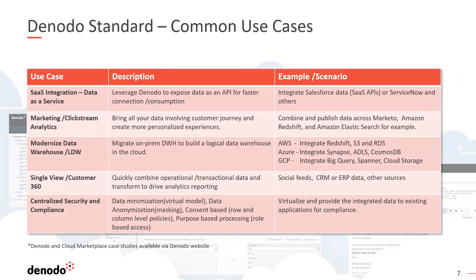Some key use cases: the most popular is SaaS integration — exposing your data as an API and bringing all data together, for example combining data from Salesforce, ServiceNow, and other SaaS applications. Marketing and clickstream analytics is another popular use case, leveraging customer journey data for personalized experiences using Marketo, Redshift, and Google Analytics. You can also modernize your data warehouse by migrating from on-premises to cloud without disrupting business applications, and build a single view of the customer by combining disparate data sources with centralized security.